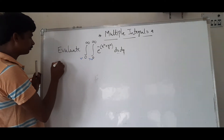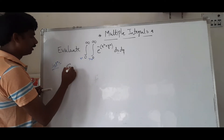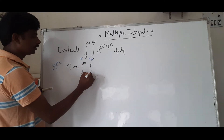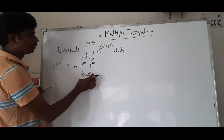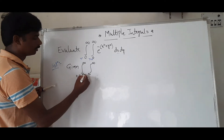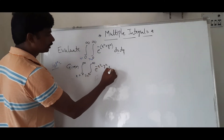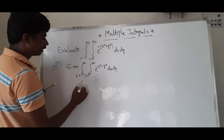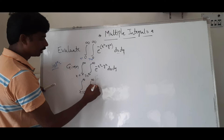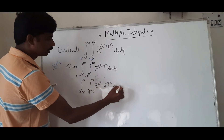The solution: given integral 0 to infinity, integral 0 to infinity, e to the power minus x squared minus y squared, into dx dy. This equals integral x equal to 0 to infinity, y equal to 0 to infinity, e to the power minus x squared into e to the power minus y squared, into dx dy.